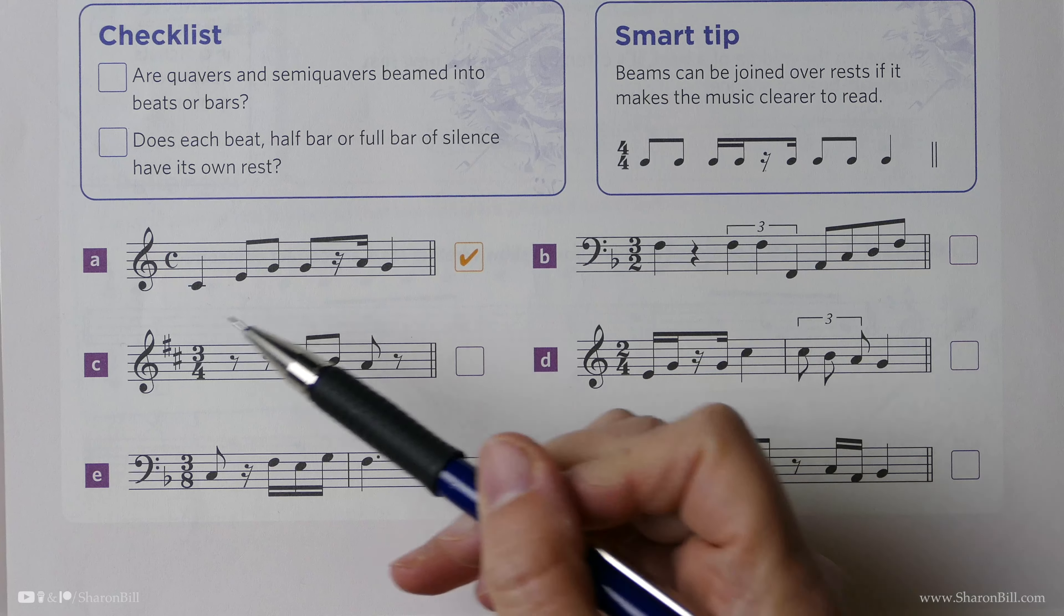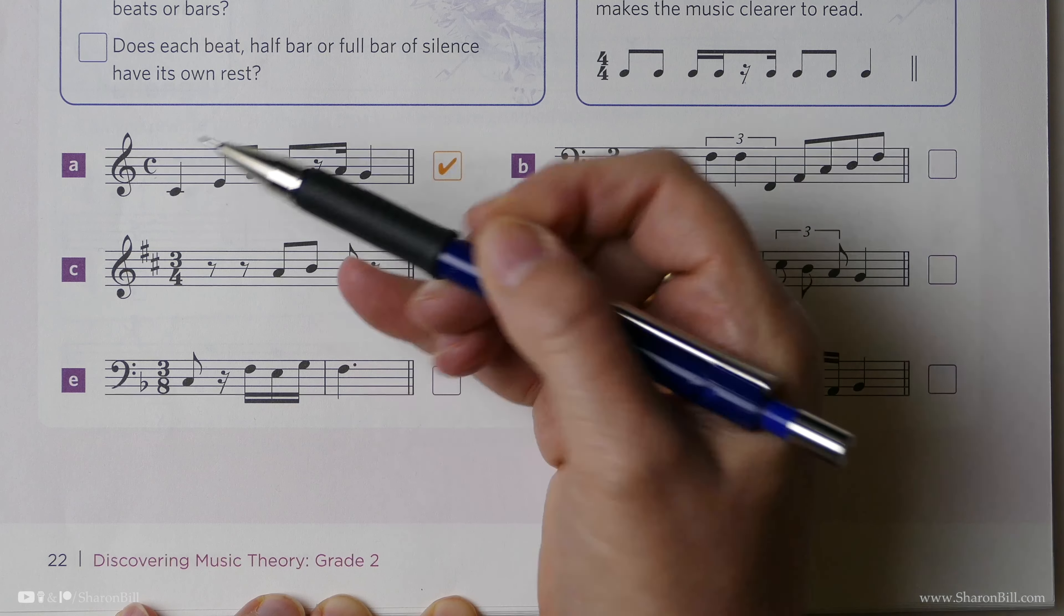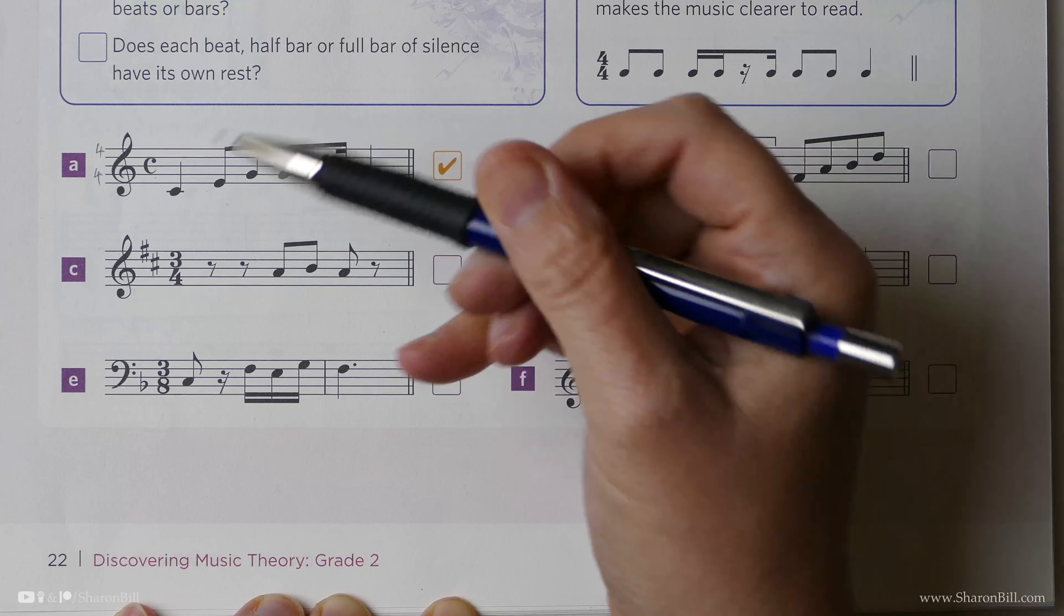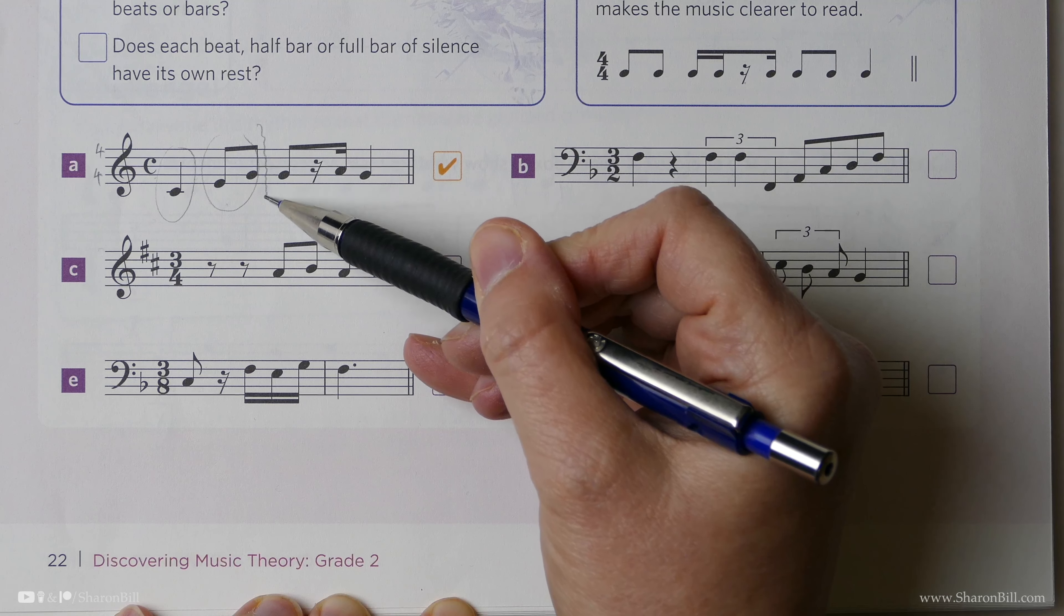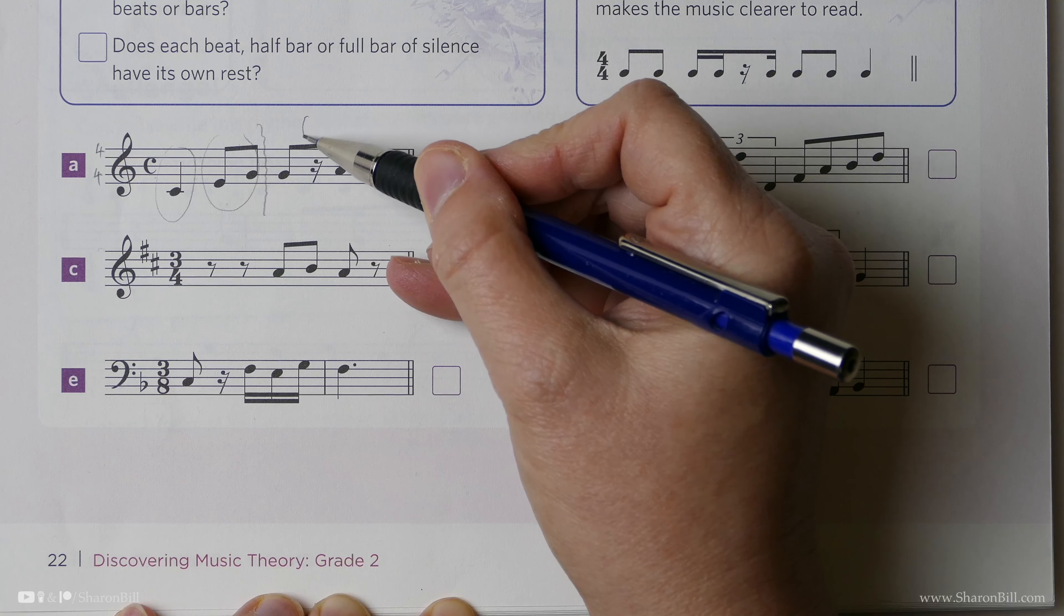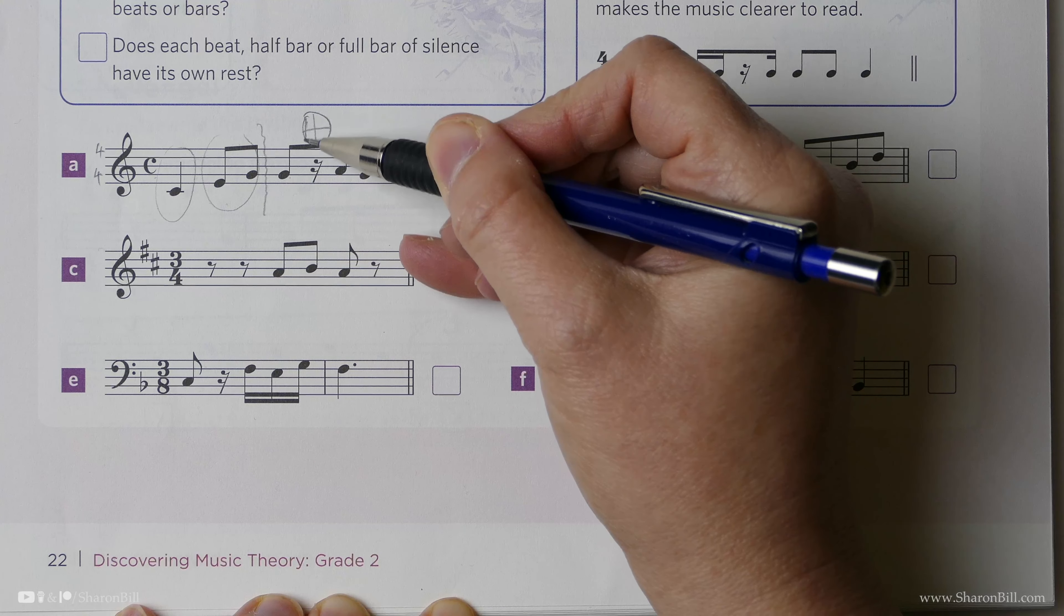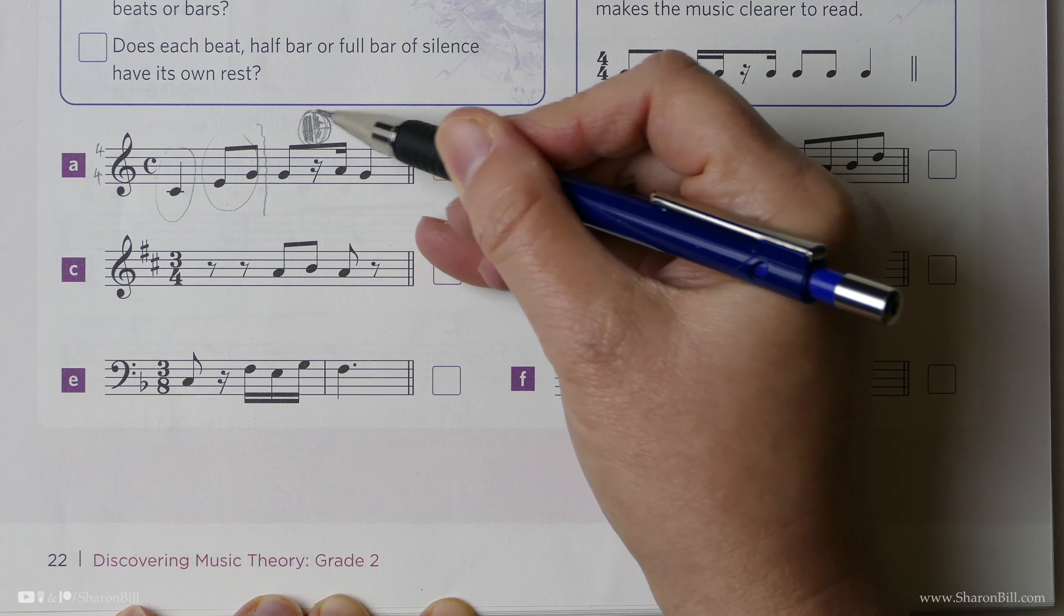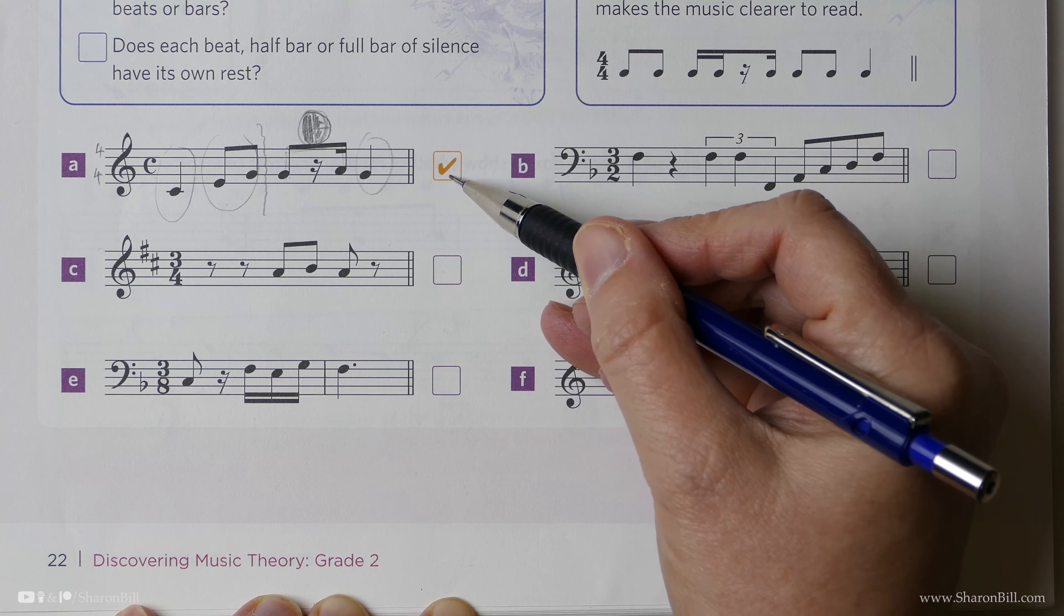Looking at the example that we've been given, we have common time here, which is 4 crotchet beats per bar. So we need to show crotchet beat 1, crotchet beat 2, not beaming over the halfway point in the bar. Now here we have a half a beat, let's just divide this out. There's our crotchet beat, we have a half a beat, a quarter of a beat rest, a quarter of a beat note, all of that gives us one crotchet beat that's all beamed together appropriately, and then there's beat 4. So that's correct.